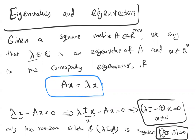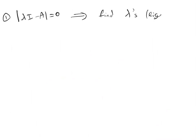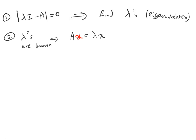We can use det(λI − A) = 0 to determine the values of λ, since A is known and I is the identity matrix. Then we substitute the found λ values back into A·x = λ·x to find the eigenvectors x. To summarize: Step 1 — set det(λI − A) = 0 and solve for eigenvalues λ. Step 2 — with λ known, solve A·x = λ·x for the eigenvectors x.